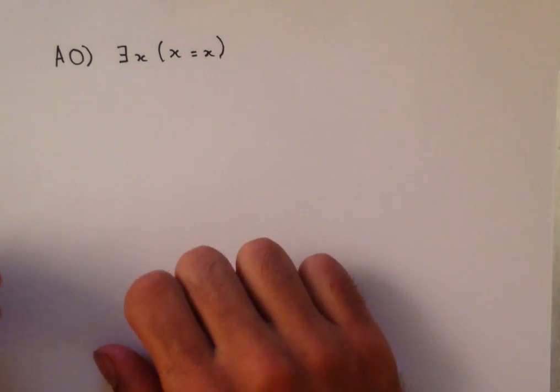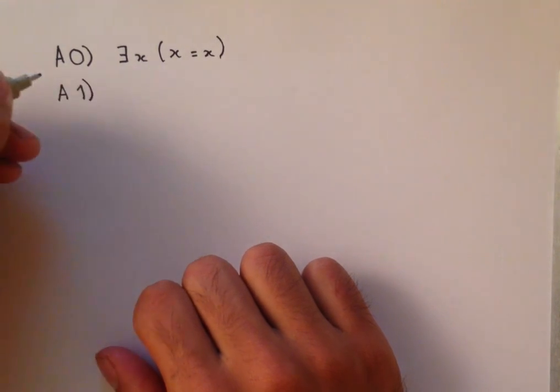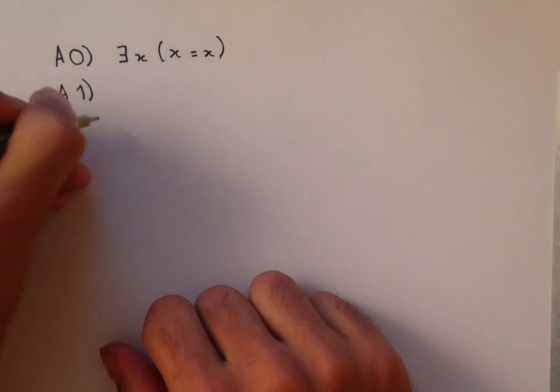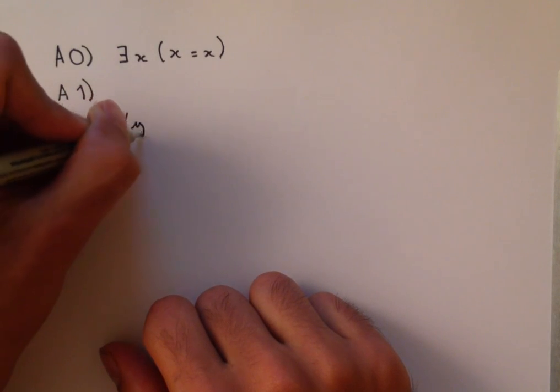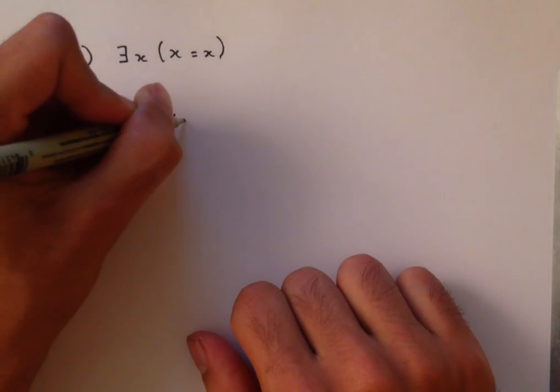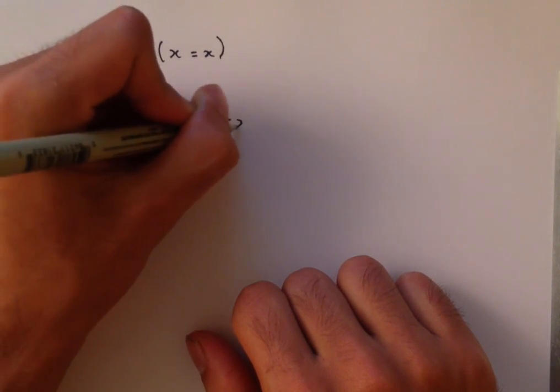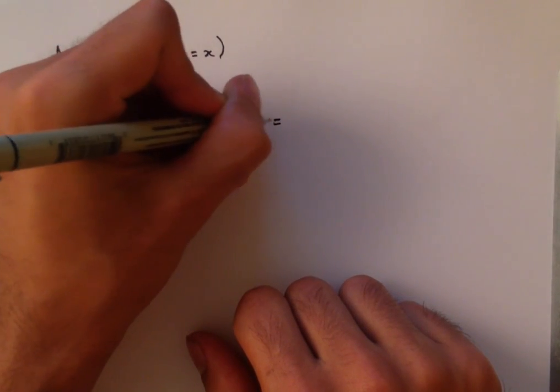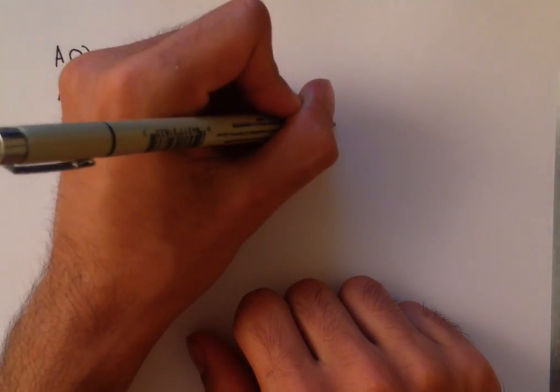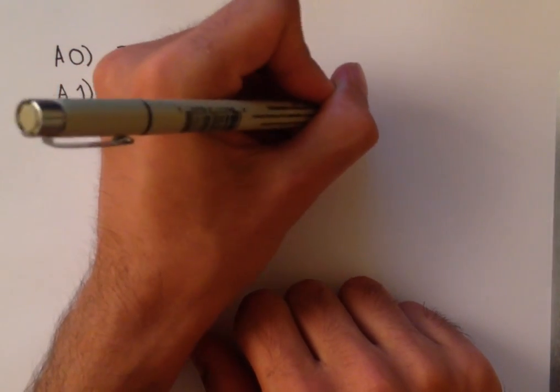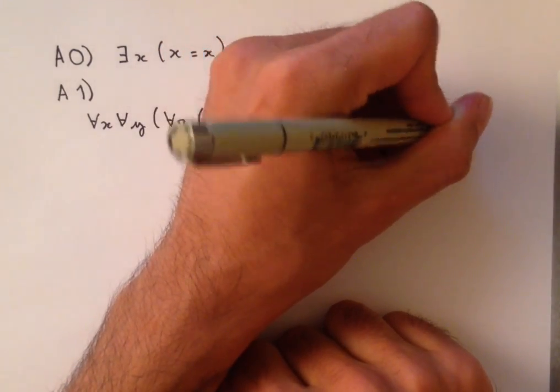The next axiom, axiom 1, is the axiom of extensionality. For all x, for all y, for all z, z is in x equivalent to z is in y implies x is equal to y.